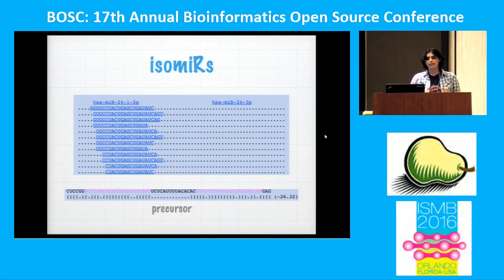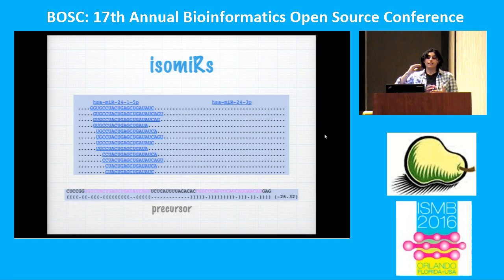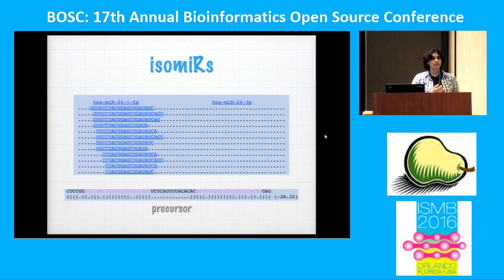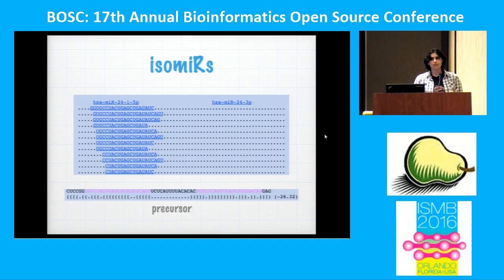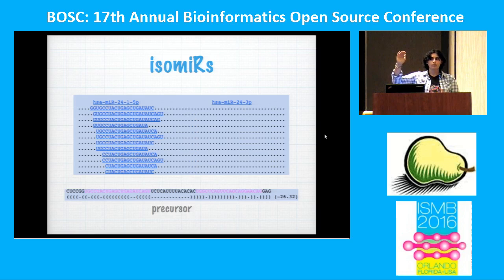You don't always get the same sequence — you get some variability at the beginning and at the end. Initially it was thought to be noise, but actually the expression of these different isoforms varies depending on species, cell type, or condition. Depending on what the cell is doing at any given moment, you will have one or another isoform more highly expressed.